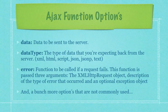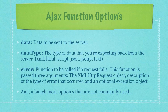'dataType' defines the type of data you're expecting back from the server — be it XML, HTML, script, JSON, JSONP, or just simple text. The 'error' option tells you what function is to be called if a request fails. This function is passed three arguments: the XMLHttpRequest object, a description of the type of error that occurred, and an optional exception object. A bunch more options are also available for the Ajax function, but they're not commonly used, so I'm not going to go over them in this part of the tutorial.